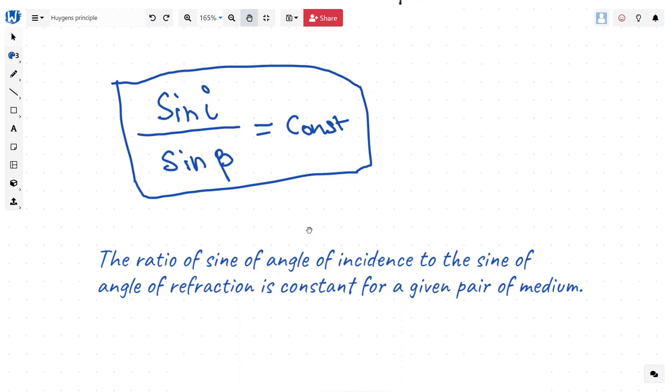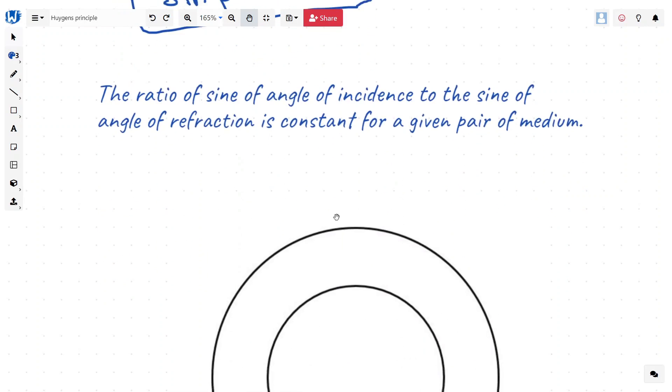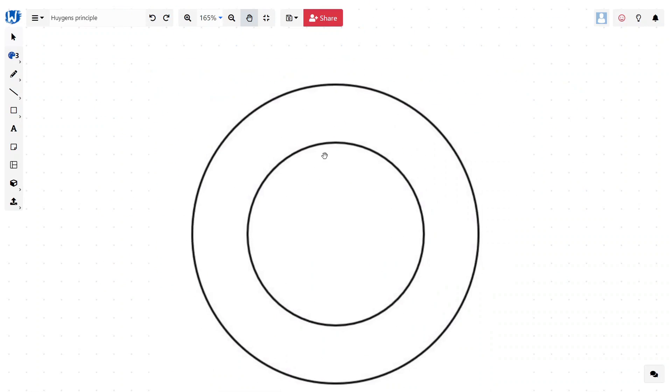The famous Dutch physicist and mathematician Christian Huygens also tries to explain this phenomena using what we call Huygens principle.